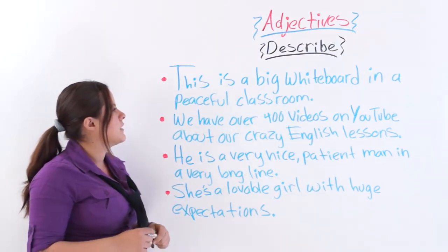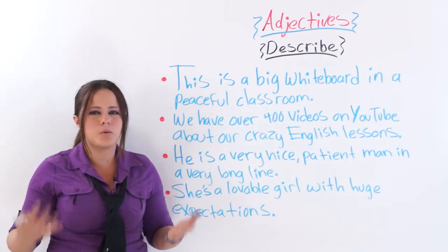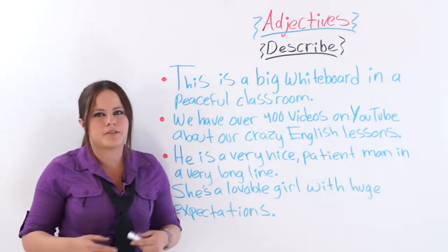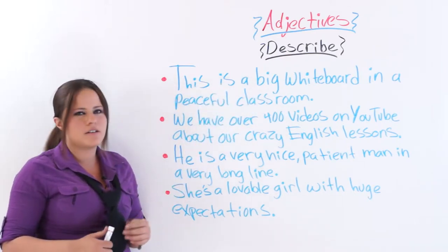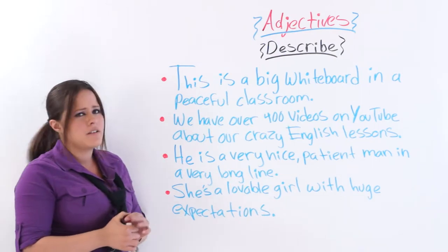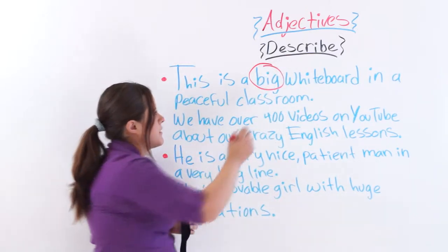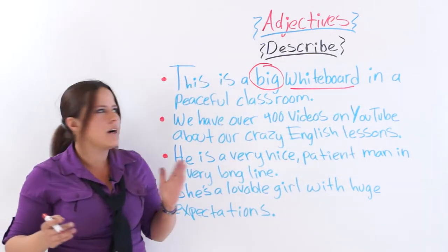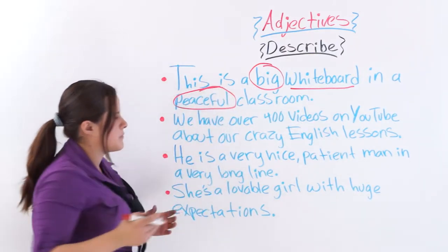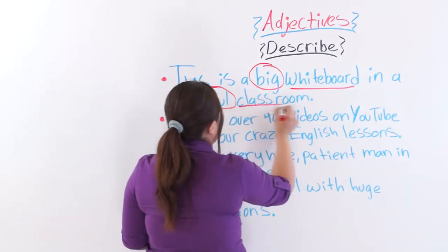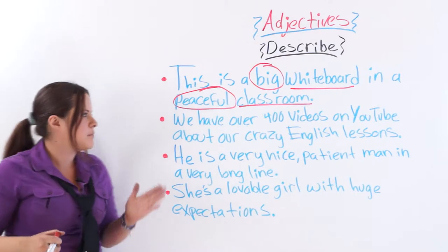This is a big whiteboard in a peaceful classroom. As I already told you, adjectives describe or give more information about nouns or pronouns. So which words in this sentence are adjectives? Big is one of them — 'big' describes the noun 'whiteboard.' And 'peaceful' describes the noun 'classroom.'